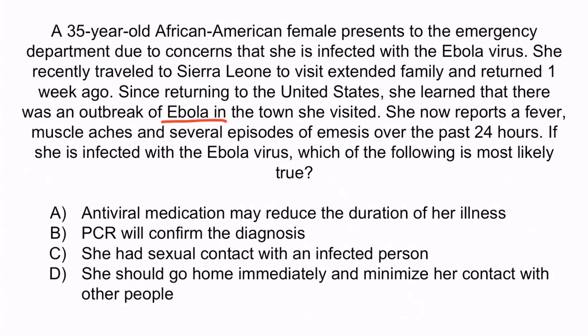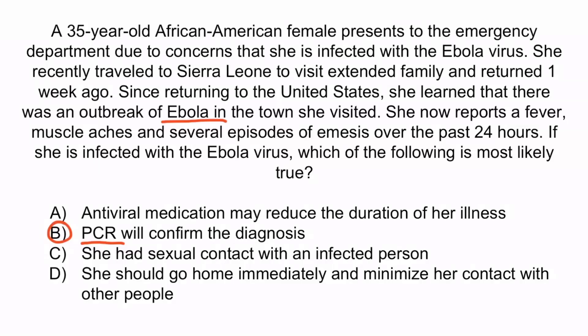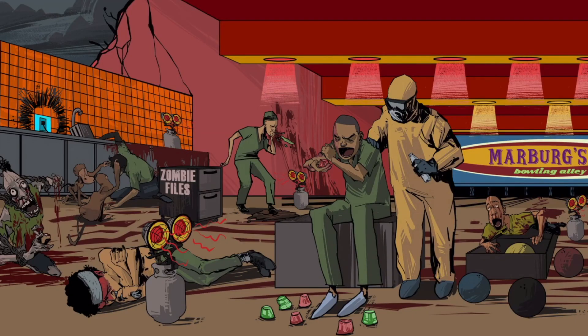We're thinking about an Ebola virus, so the correct answer is B — you will confirm infection with PCR. Remember that zombie with the three chains, representing polymerase chain reaction. A is wrong because antiviral medications will not help; the only treatment is supportive care. C is wrong because Ebola and Marburg are not sexually transmitted — they are transmitted through bodily fluids or fomites, apes, and dead bodies, though transmission during a sexual encounter is possible but far less likely. D is wrong because the patient won't be sent home until the infection is controlled; Ebola-infected people are quarantined and all healthcare workers must use PPE with each encounter. And with that, you've learned all that you need to know for Ebola and Marburg viruses.